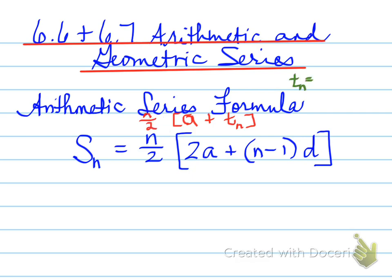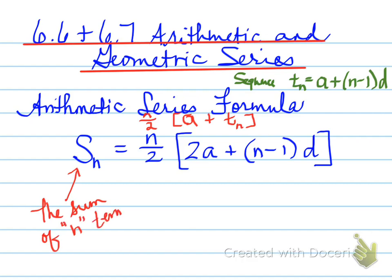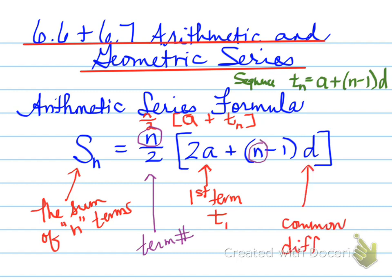All of these values represent a formula that you need to memorize. This is the arithmetic series formula. Sn stands for the sum of the n number of terms, how much the total addition of all the terms in the particular sequence that you're looking at. n represents the term number, the a represents T1 the first term, and d represents the common difference.